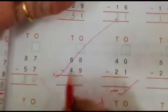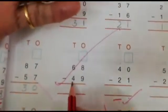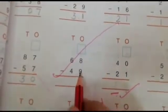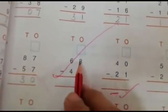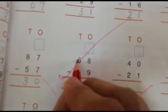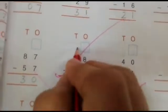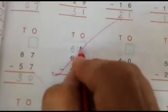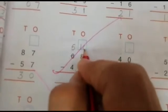Now 68 minus 49. We cannot take away 9 from 8. No. Then we will go to 10s. 5 tens and 10 ones.